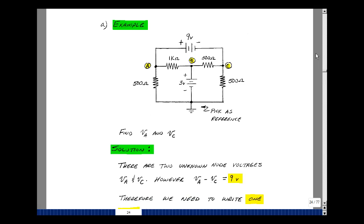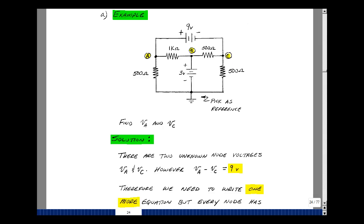Now, I also have a constraint between nodes A and C, and that node voltage A minus node voltage C is equal to 9 volts. I have one equation in my two unknowns, V sub A and V sub C. I need one more equation, but the rest of my nodes have a voltage source hooked up to it.